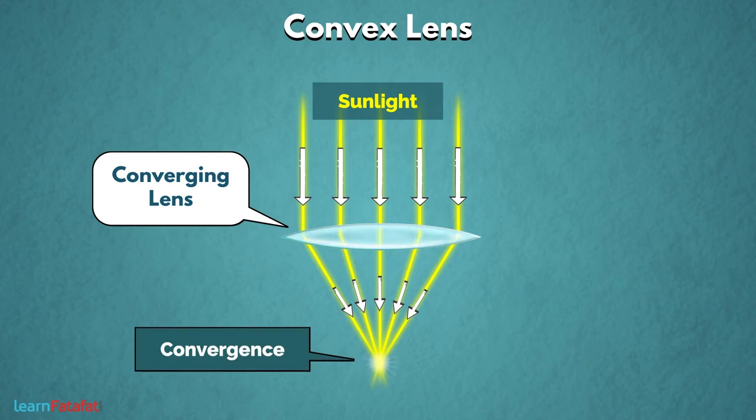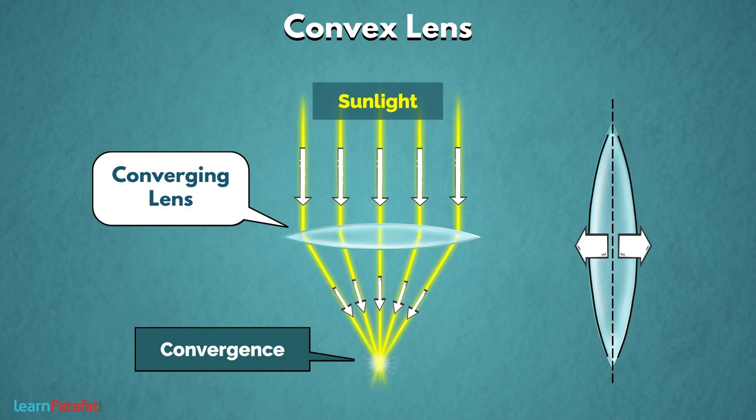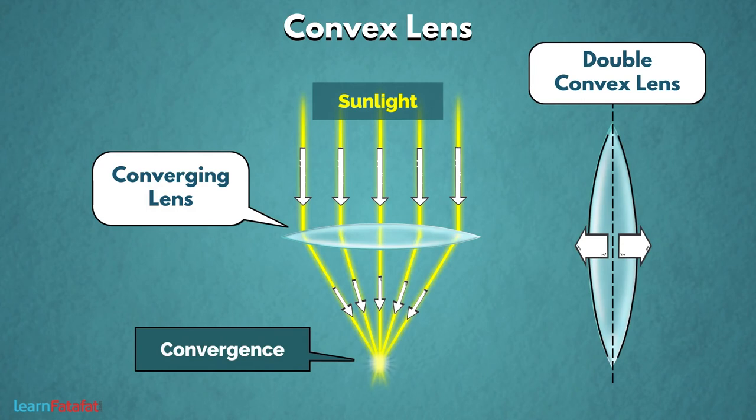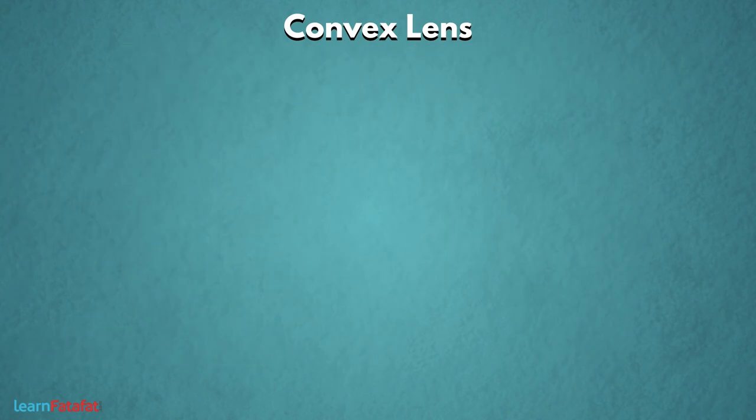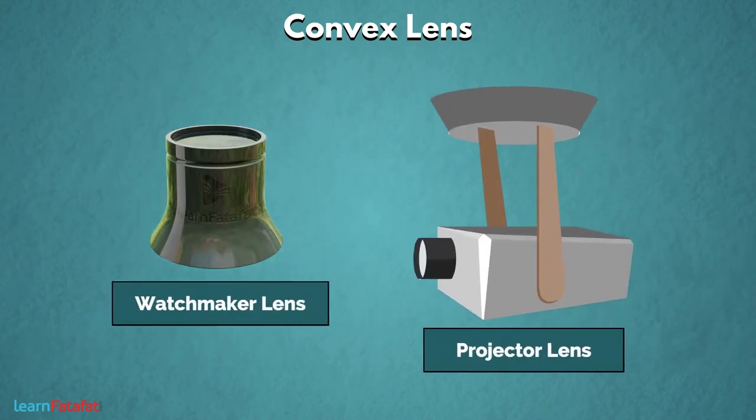इसी के साथ, as the two surfaces of it are bulging outwards, therefore this lens is also called double convex lens. इसके और examples हैं watchmaker lens और projector lens.